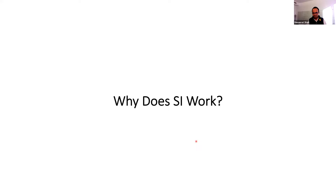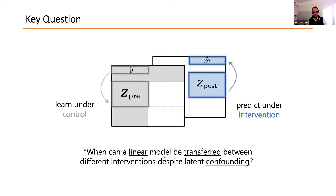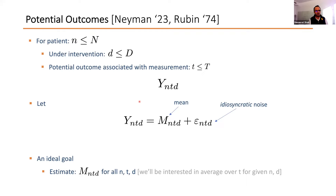The key question for why synthetic intervention works: why are we able to do a model transfer between treatments, and why is it linear? There are two parts — the linearity and the model transfer — and we're doing this even if observations might be confounded. What confounding is permitted? When should linearity hold? These are the questions. Let me introduce the basic potential outcomes framework for this setting.